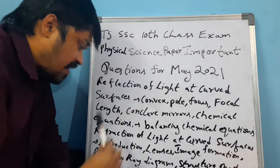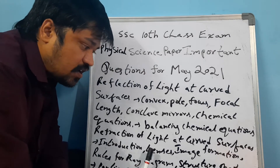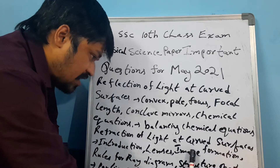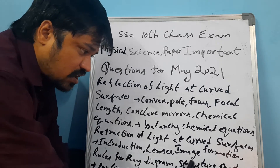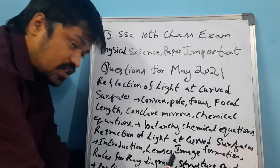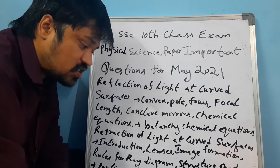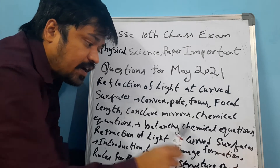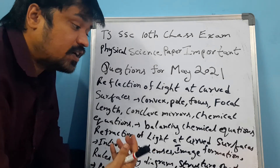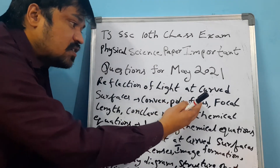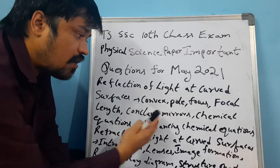Refraction of light at curved surfaces — what is the introduction to this topic. Lenses: image formation, and rules for ray diagram. Structure of atom: what is Pauli's principle. Electric current: what are the safety fuses, what is the meaning of fuse, what are the safety fuses, and what is the focus and focal length.